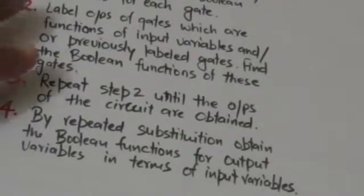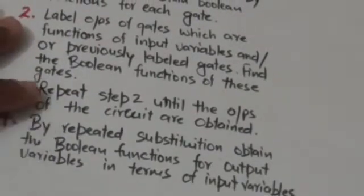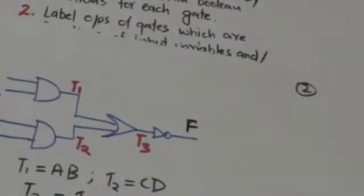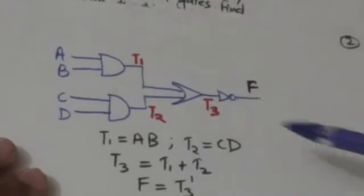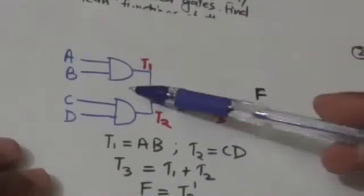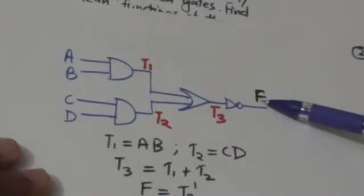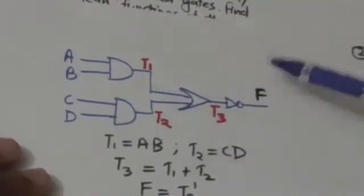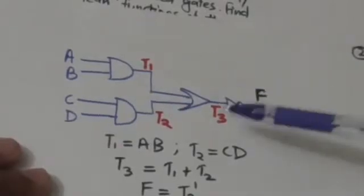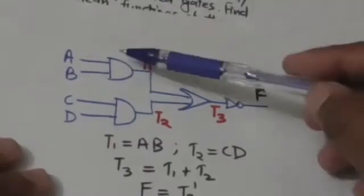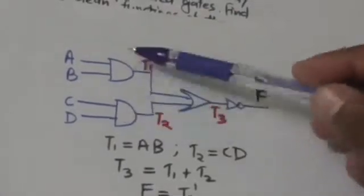Then, by repeated substitution, we obtain the boolean functions for output variables in terms of input variables. Now suppose this logic diagram is given to us and we have to obtain the boolean function for the output variable F, where A, B, C, and D are the input variables.